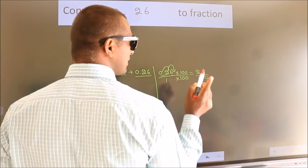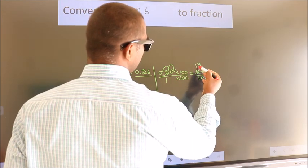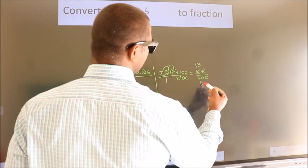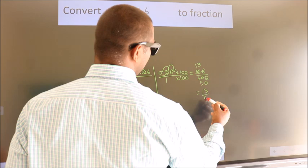Now I cancel with 2. 2 into 2 is 1, 2 into 6 is 3, 2 into 10 is 5, 0 as it is. So the fraction we got is 13 by 50.